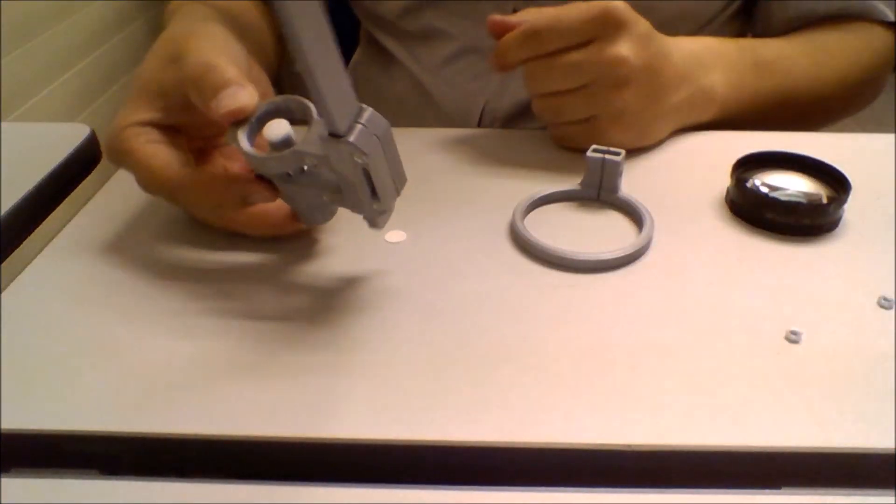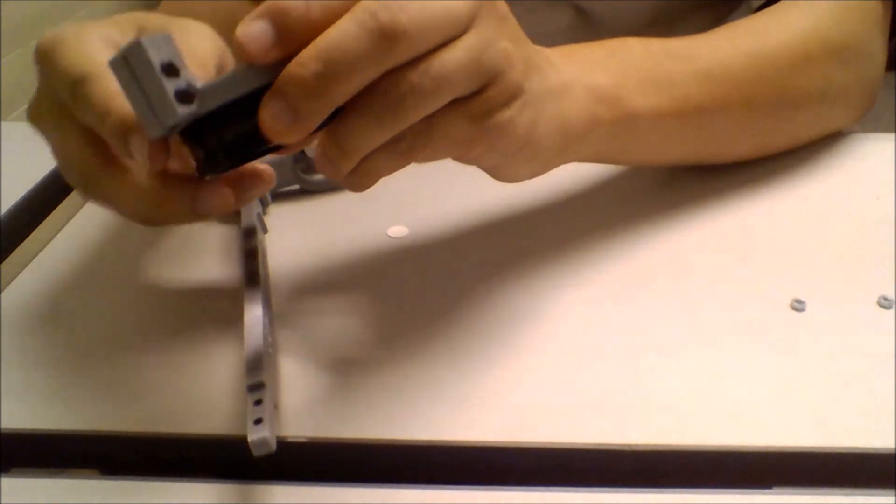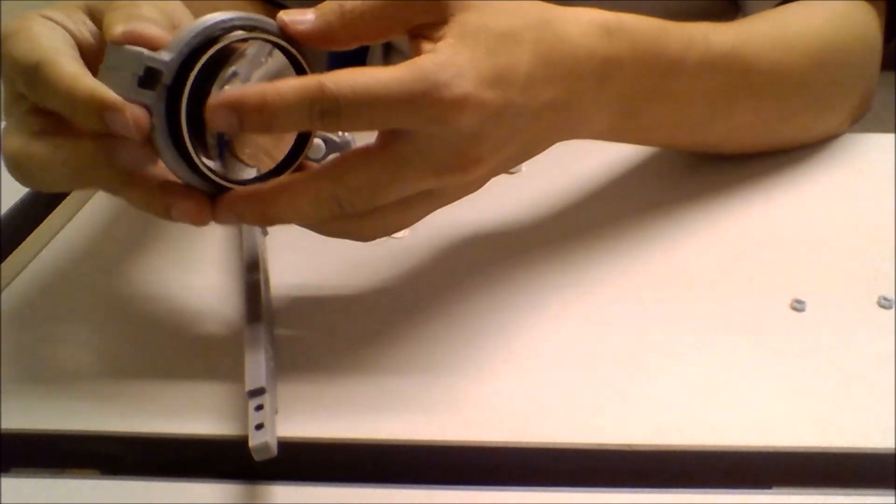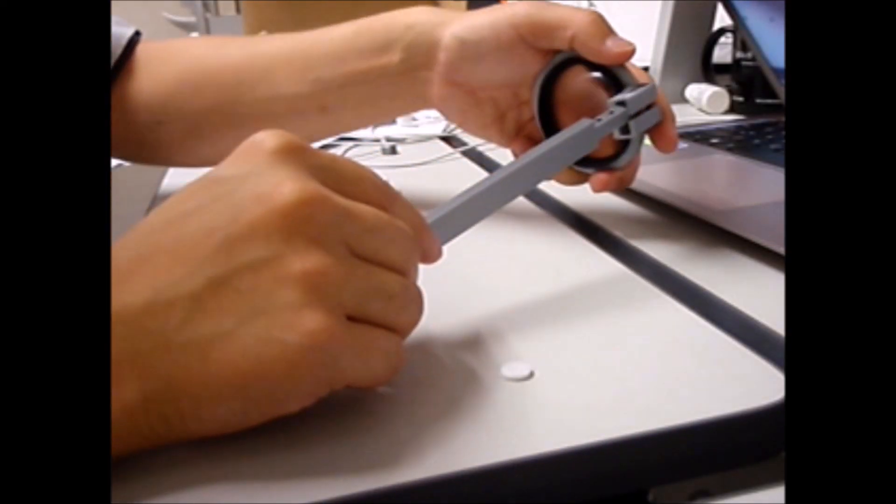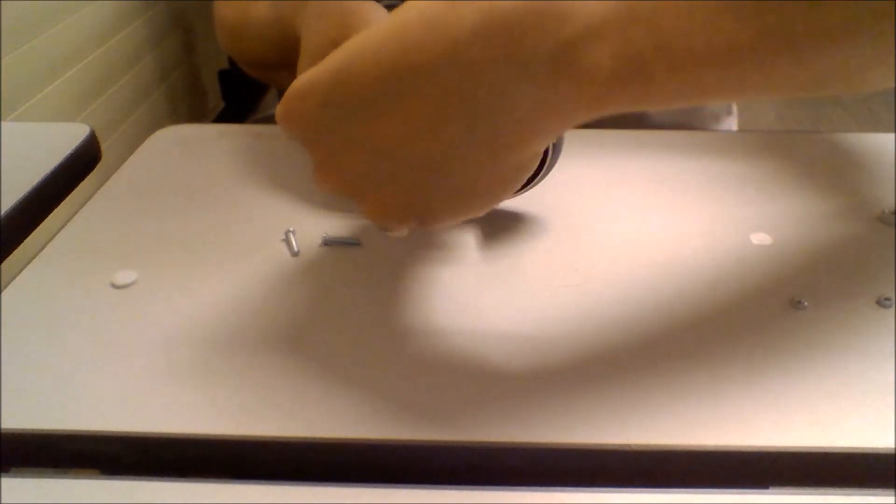Then, place the 20 diopter lens onto the lens mount. Attach it onto the lens arm and secure it with two M3 bolts and nuts.